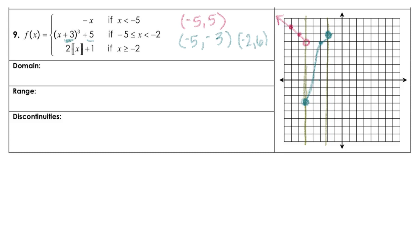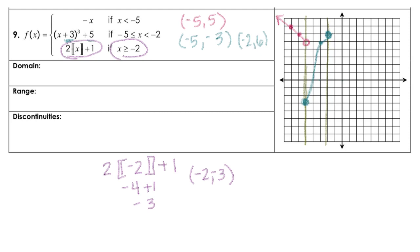Now let's look at the greatest integer part. When plugging in, it will look strange. Plugging in negative 2: the greatest integer of negative 2 is negative 2, so we have 2 times negative 2 plus 1, giving negative 4 plus 1, or negative 3. So I have (negative 2, negative 3) — go back 2, down 3, and we contain that point. When drawing this, we go up to the next integer with an open circle, then jump up one with closed and connect that to open, closed to open, and so on.